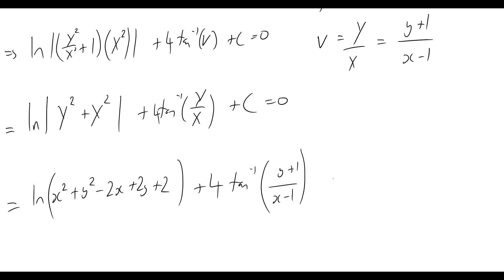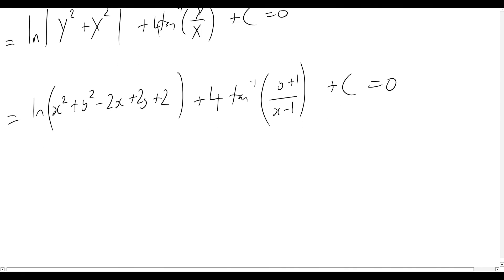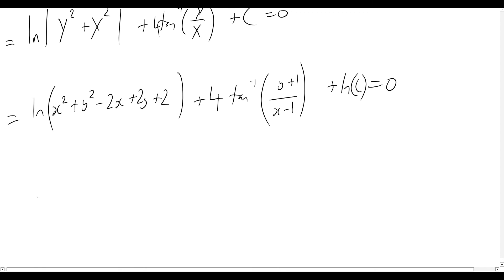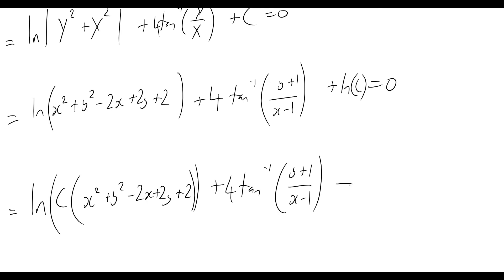Writing C as ln(c) to absorb it into the logarithm using log laws, our very final answer is: ln(c(x² + y² - 2x + 2y + 2)) + 4·arctan((y + 1)/(x - 1)) = 0.